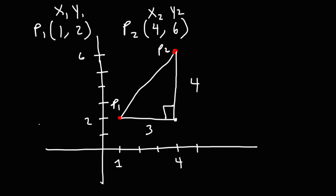So all we need to do is find the hypotenuse of the right triangle. And we could use the Pythagorean theorem to get that answer. This is A, B, and C. So in this example, A is 3, B is 4, and we're looking for C. So according to the Pythagorean theorem,